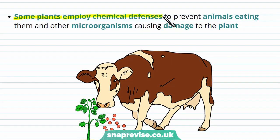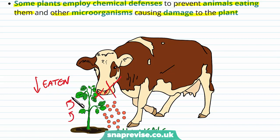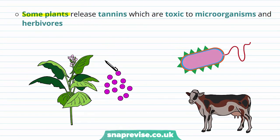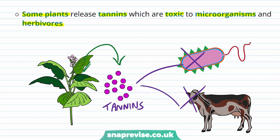Some plants employ chemical defences to prevent animals from eating them and to stop microorganisms causing damage. Plants have evolved to release certain chemicals that can inhibit animals or put them off from eating, reducing the amount of plant eaten. A good example is tannins — chemicals that are toxic to microorganisms and harmful to herbivores. The plant releases tannins from its cells onto its surface, so herbivores avoid eating the plant and microorganisms avoid the tannins.